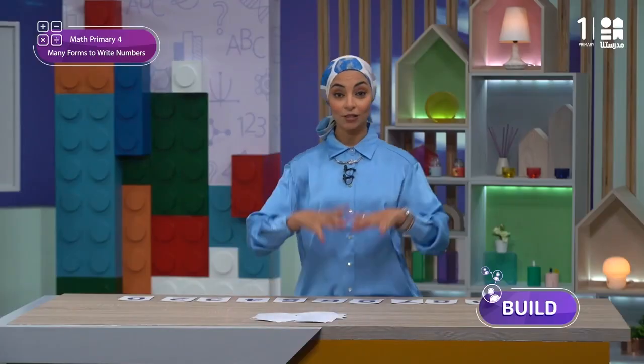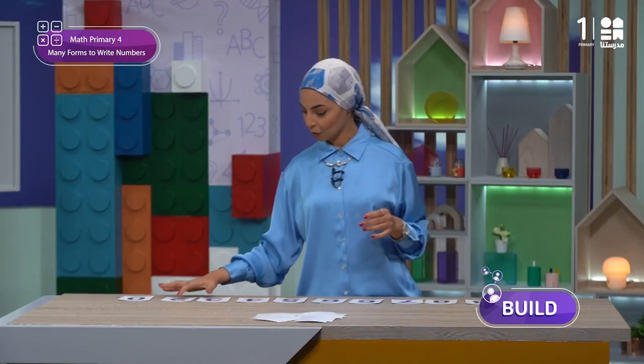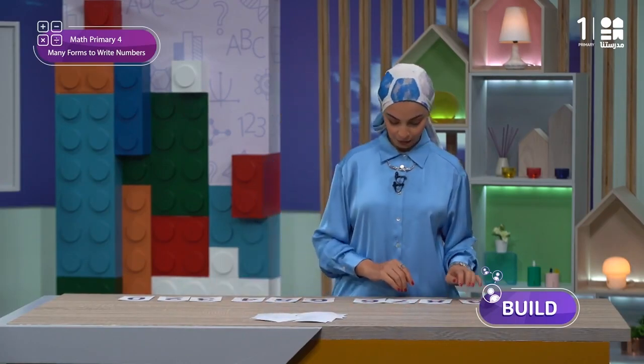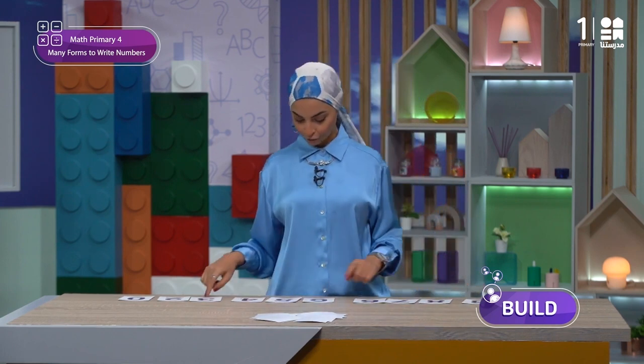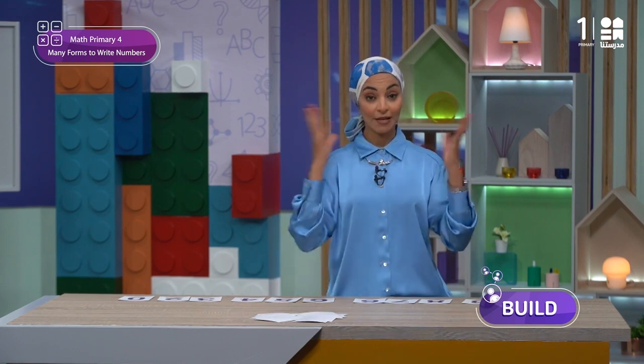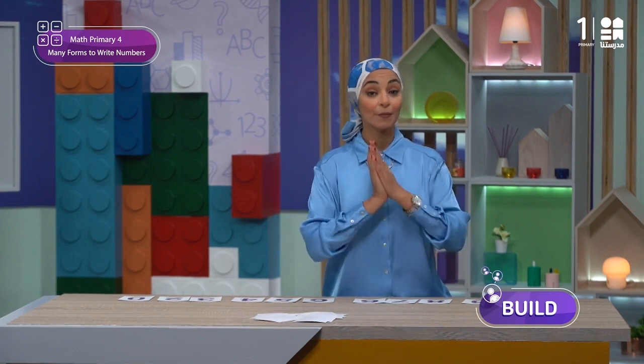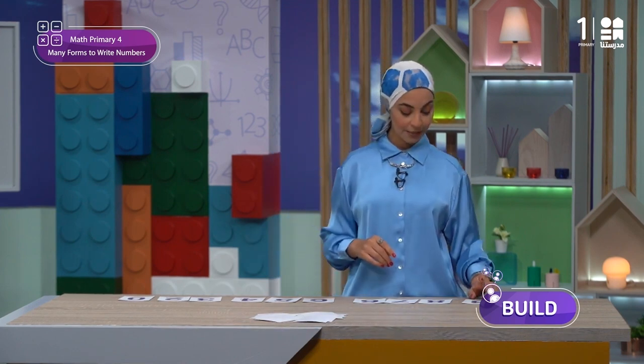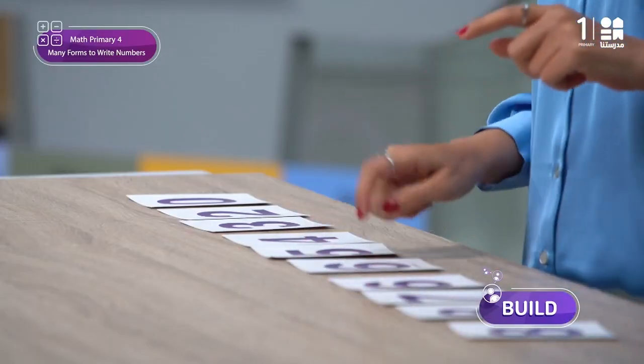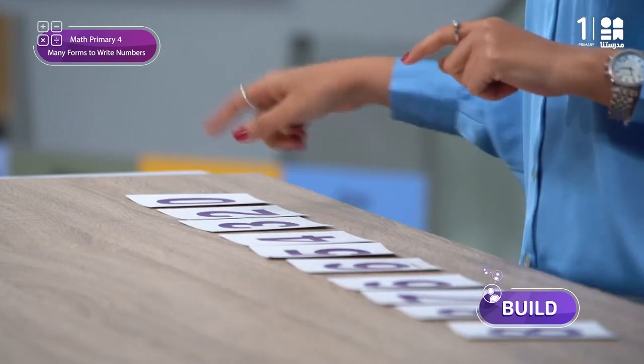So I arranged this to the biggest number. Let me read it. I want to read this number. Yes, it's formed of ten cards, so the biggest period is the milliard. This is eight milliard, eight hundred seventy-six million, six hundred fifty-four thousand and three hundred twenty.